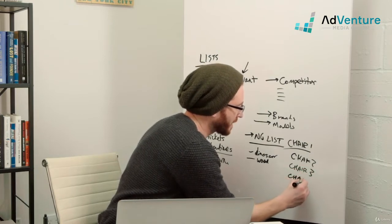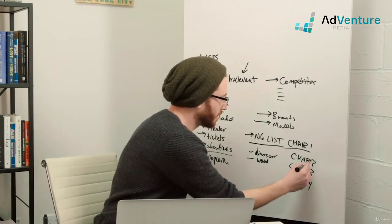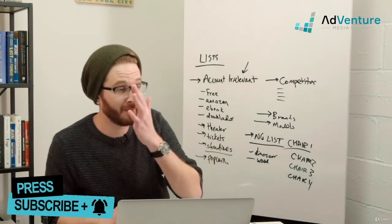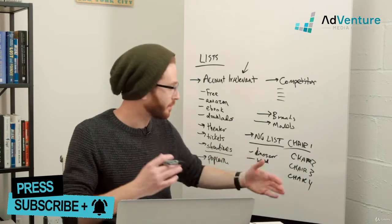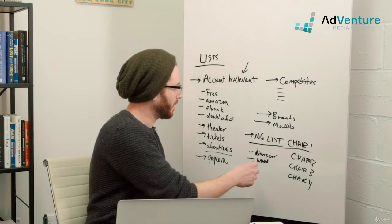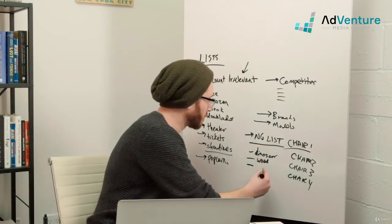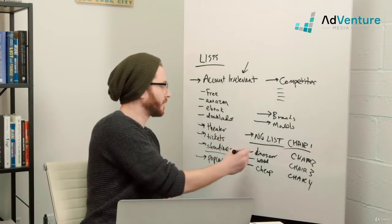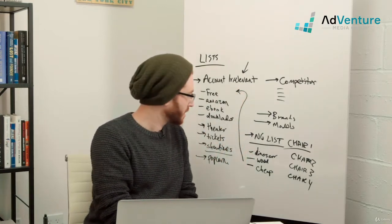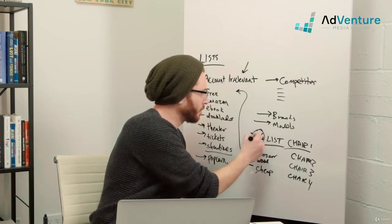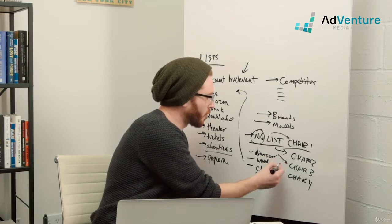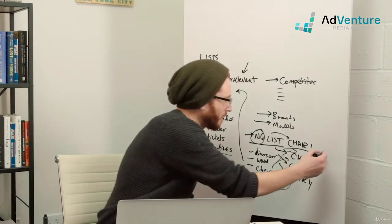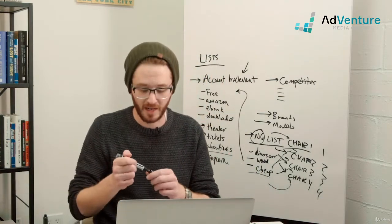Your campaigns might be broken out by match type, different types of chairs, different locations, budgets, or hours of the day. Now as I add another keyword to this list — say 'cheap,' because I don't sell cheap chairs but I do sell cheap accessories — if this negative keyword list is already applied to four campaigns, then 'cheap' will automatically be applied as a negative keyword to all four campaigns at once. All I need to do is add it once to my list instead of adding it four times to each individual campaign. That's the power of negative keyword lists.